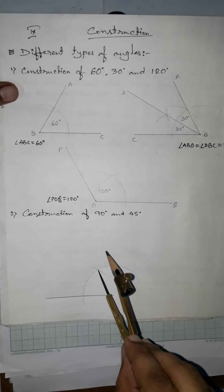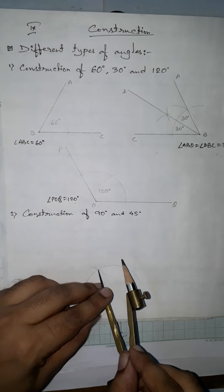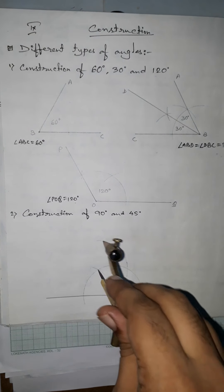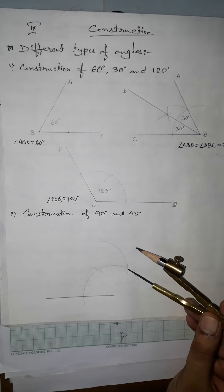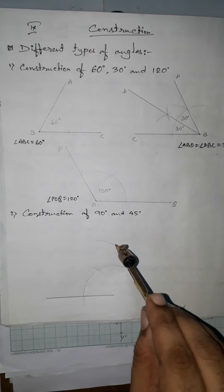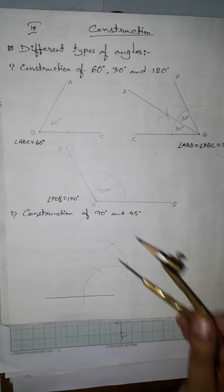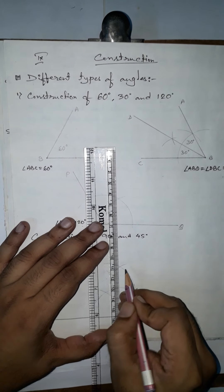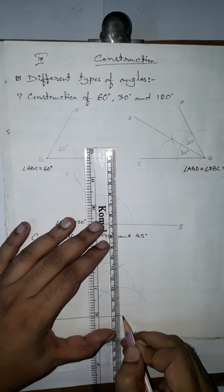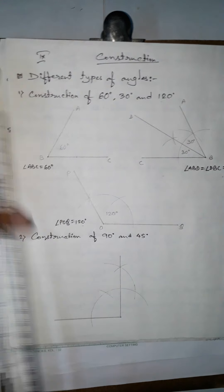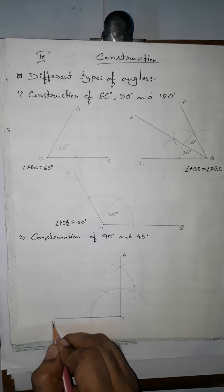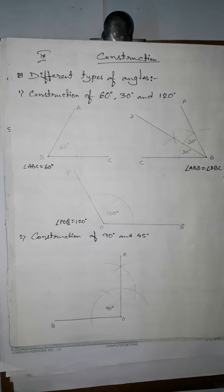From the 60-degree intersection point we give another arc, reaching toward the 120-degree position. Then from the 120-degree intersection point we draw an arc that intersects the previous arc. Joining the vertex to this new intersection point gives the 90-degree angle. So angle AOB = 90 degrees, a perpendicular.